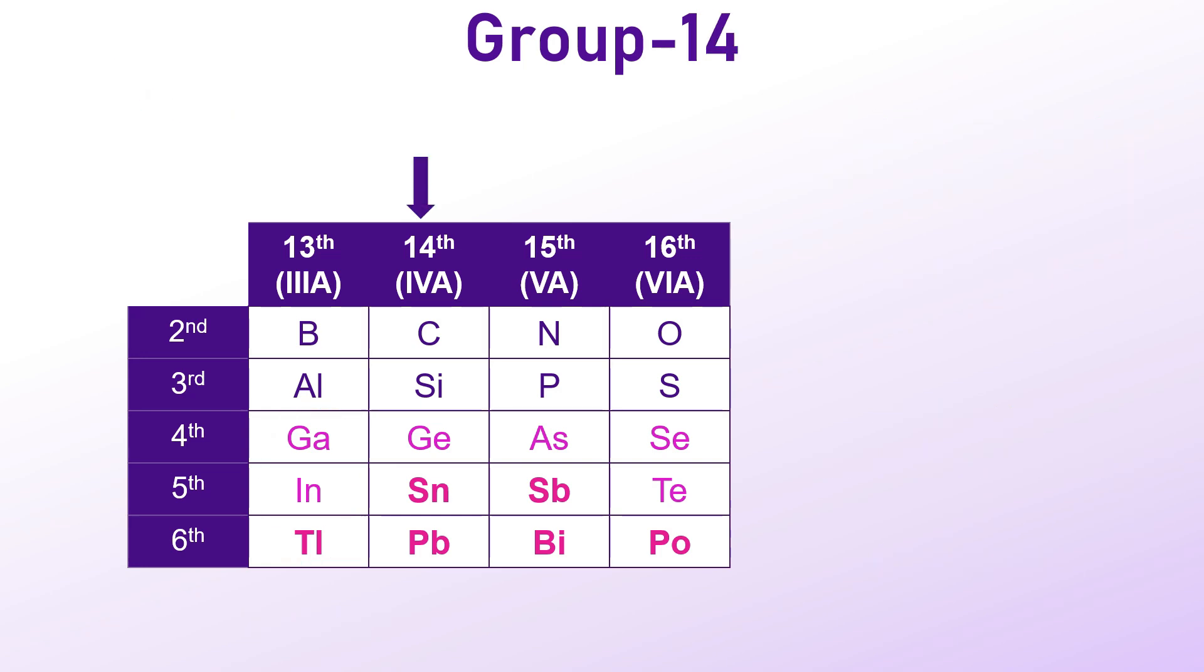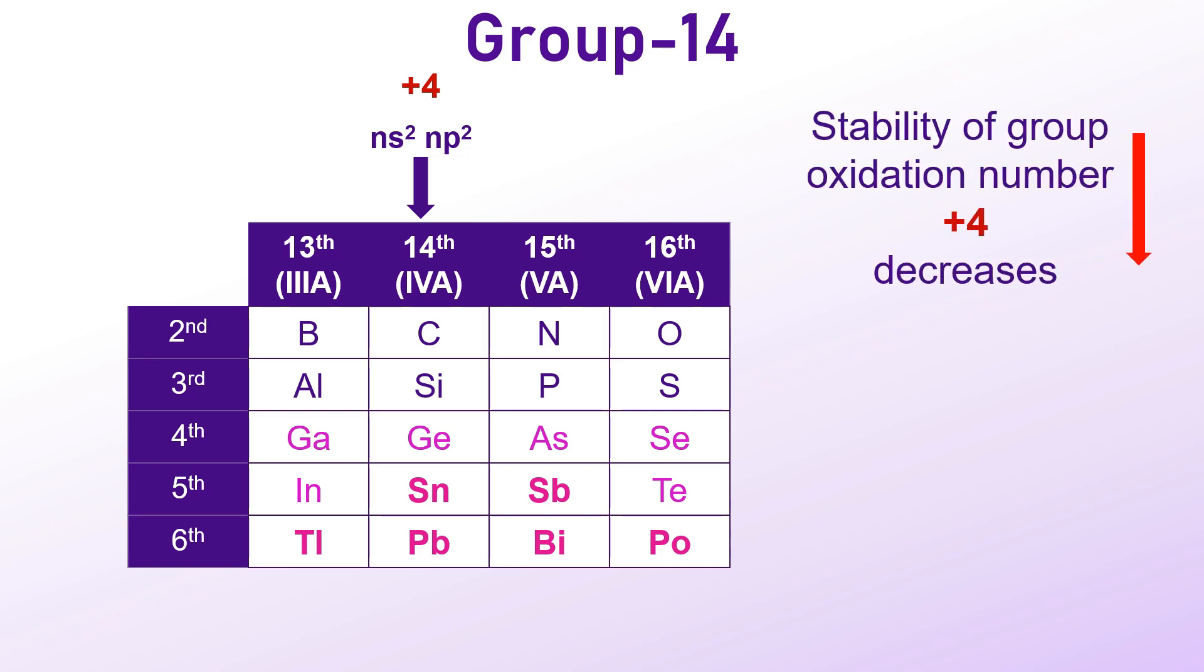In group 14, the common oxidation state is +4 due to NS2NP2 valence electronic configuration. However, the stability of +4 oxidation state decreases down the group, while the +2 oxidation state becomes more stable.